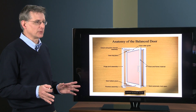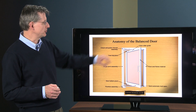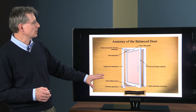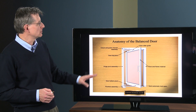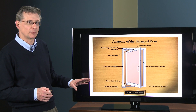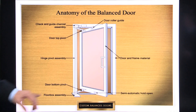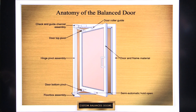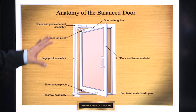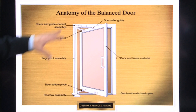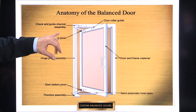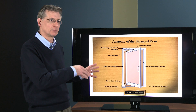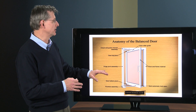Now we're going to talk about the anatomy of a balanced door. What you're going to see on the screen is basically a door, slightly opened, showing all the different component parts. Obviously, part of the system is the frame, the other part the door itself, and then the major parts are the balanced hardware shown in schematic fashion. A lot of these parts are built inside the door frame, shown solid so we can see them.